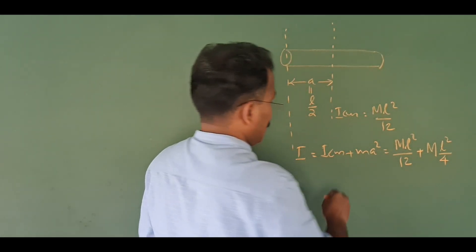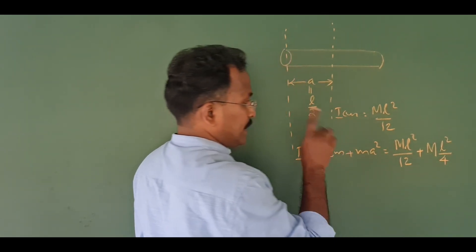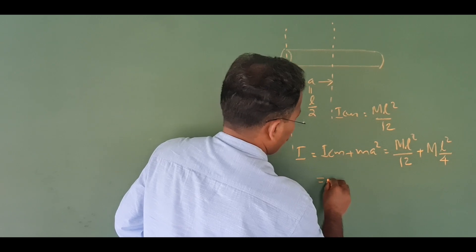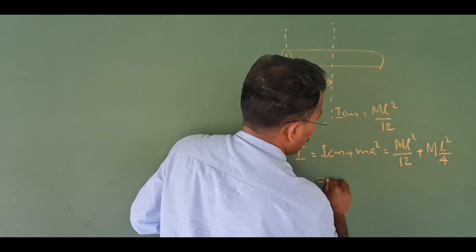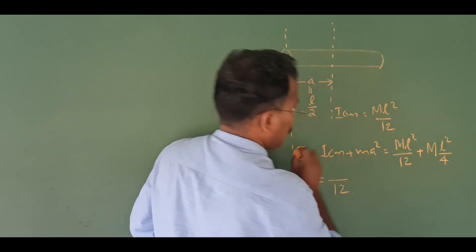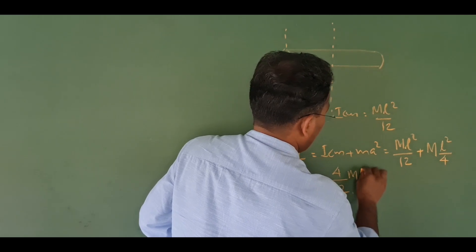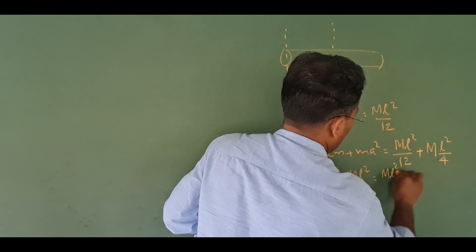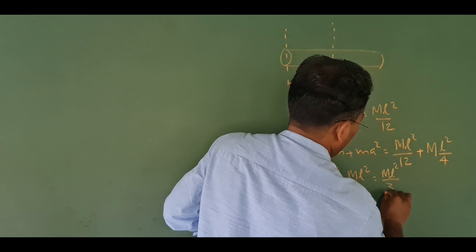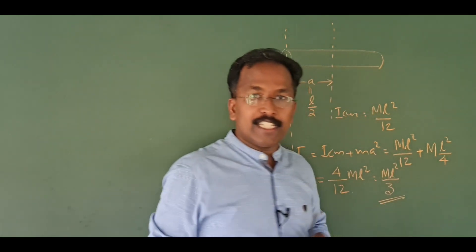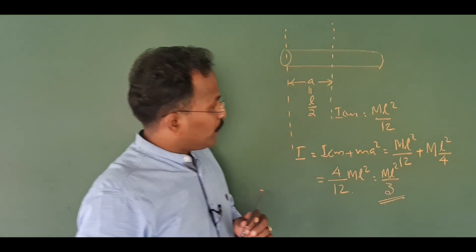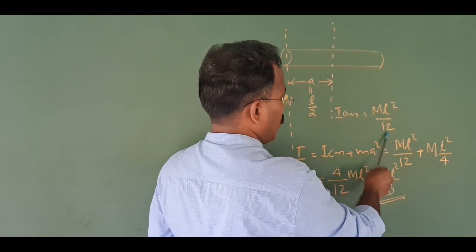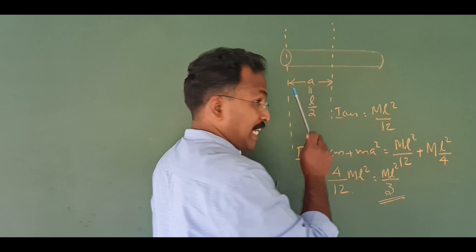The distance a squared is L² by 4. Substituting: ML² by 12 plus ML² by 4. Combining these fractions gives ML² by 3. So the moment of inertia about the end axis of a rod is ML² by 3, compared to ML² by 12 about the center.